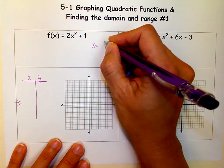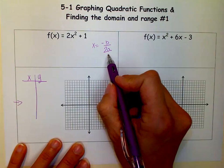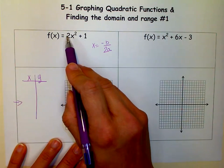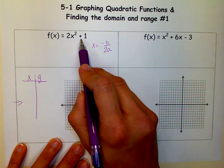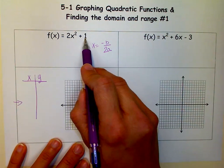You might remember that the axis of symmetry equation is x equals negative b over 2a, so I'm going to do that first. Remember, a is the coefficient in front of x-squared, b is the number in front of the x-term, which is missing in this one, and c is the constant.